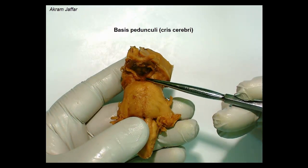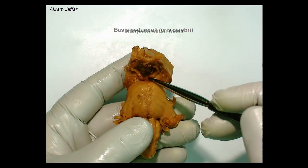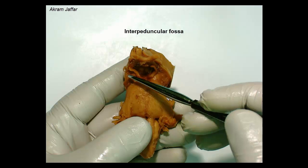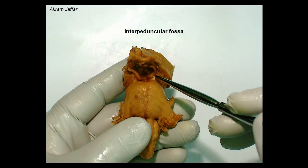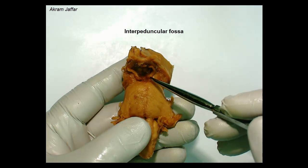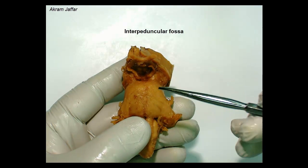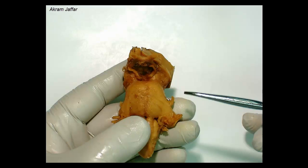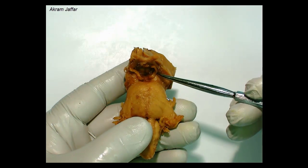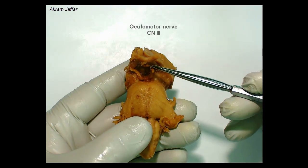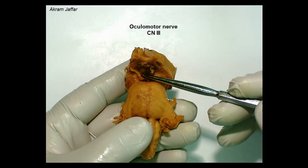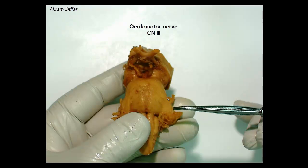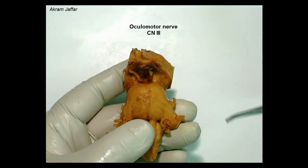In between them, the fossa here is called the interpeduncular fossa, between the two crura or peduncles — the basis pedunculae. From this fossa arises the oculomotor nerve, the third cranial nerve.